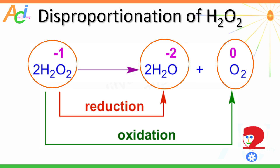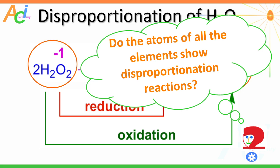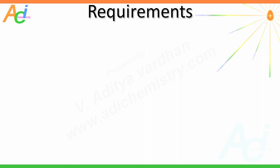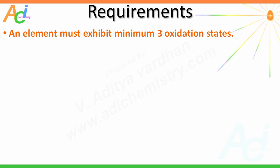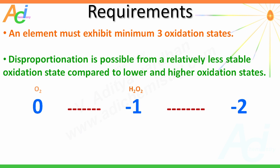Now the question is: why does peroxide undergo disproportionation? Do atoms of all elements show disproportionation reactions? One should note that an element must exhibit a minimum of three oxidation states in order to show a disproportionation reaction, and among which one oxidation state must be relatively less stable compared to a lower and a higher oxidation state. For example, in the case of oxygen, it exhibits three oxidation numbers: –1 in hydrogen peroxide, 0 in dioxygen, and –2 in water. The –1 oxidation number in hydrogen peroxide is less stable compared to 0 and –2, and hence hydrogen peroxide undergoes disproportionation.